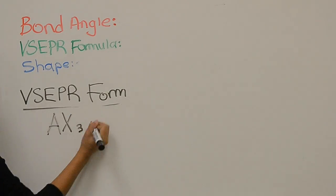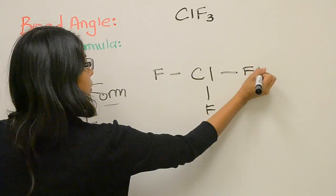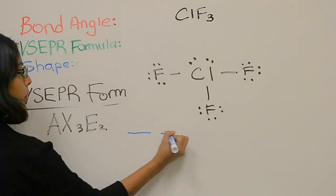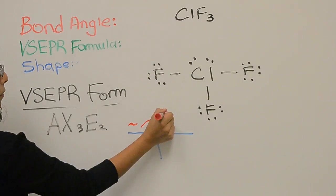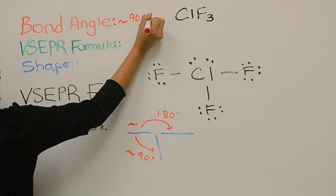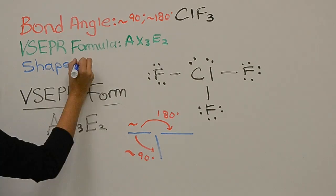Chlorine trifluoride has a VSEPR formula of AX3E2. As you can tell, the two lone pairs are also pushing on the chlorine atoms, creating a T shape with bond angles approximately 90 and 180 degrees.